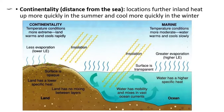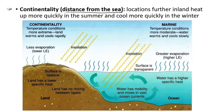The next factor is continentality — the distance from the sea. Locations that are further inland heat up more quickly in the summer and cool more quickly in the winter. Areas that are distant from the sea tend to experience higher temperature than areas close to the sea.